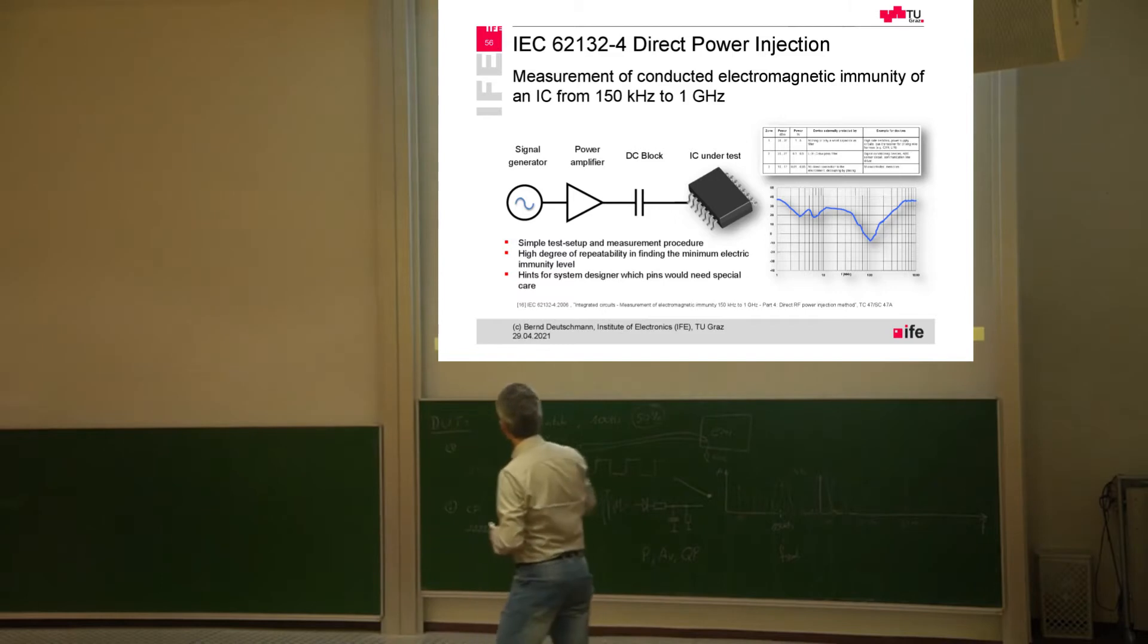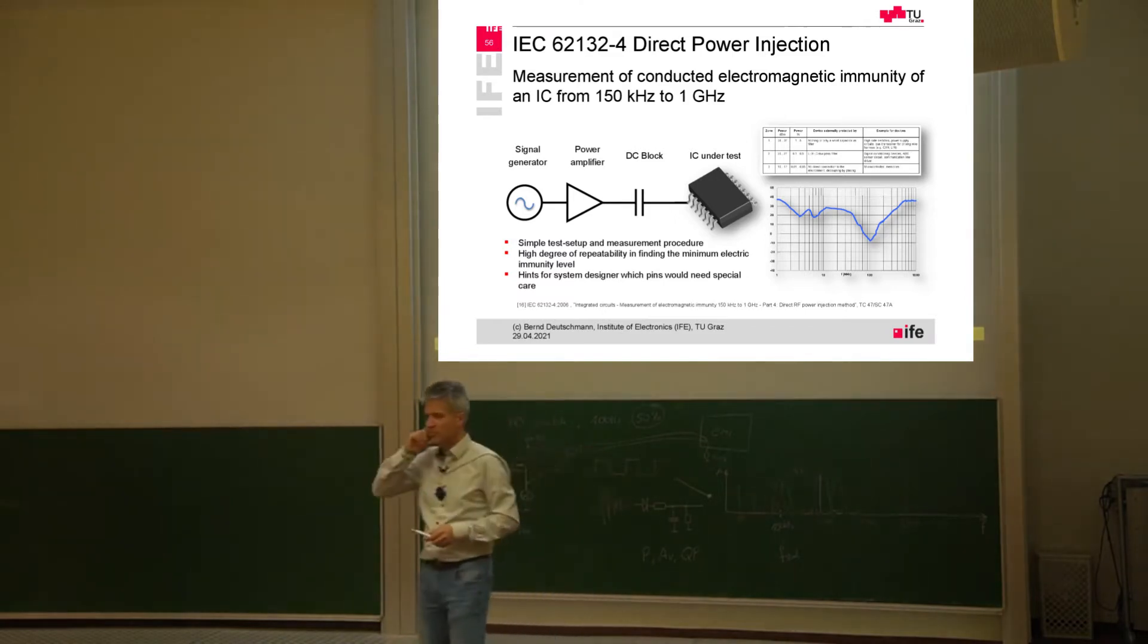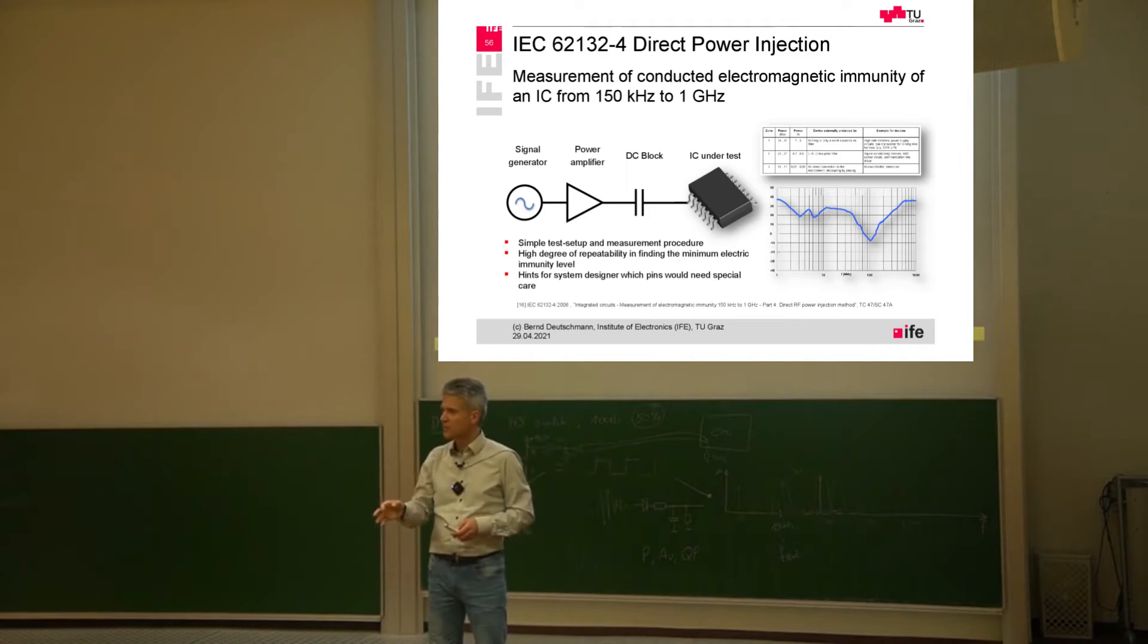And on the IC level, the slide before you maybe have seen, you can make pin selective measurements. So this is then the one way of just injecting into one trace on the printed circuit board. But you can also make common mode or noise injection by multiple pins, and then you are using multiple traces that are then inside of this coupling clamp.